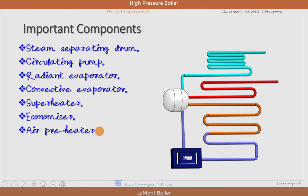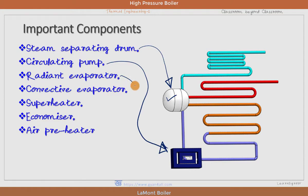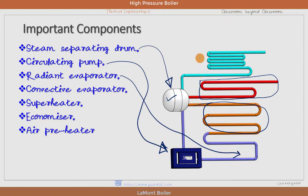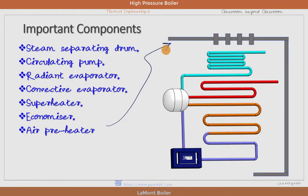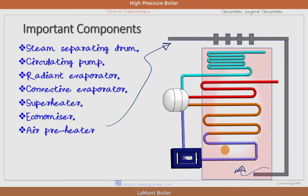Now the important components of the Lamont boiler. One important component is the steam and water separating drum. Next is the circulating pump, the radiant evaporator, and the convective evaporator. These red color pipes are the superheater. This is the economizer, and there is an air preheater above the economizer, which supplies hot air to the furnace. All these are enclosed within a refractory structure, and the hot gases of the combustion process pass through these tubes and are discharged to the atmosphere.